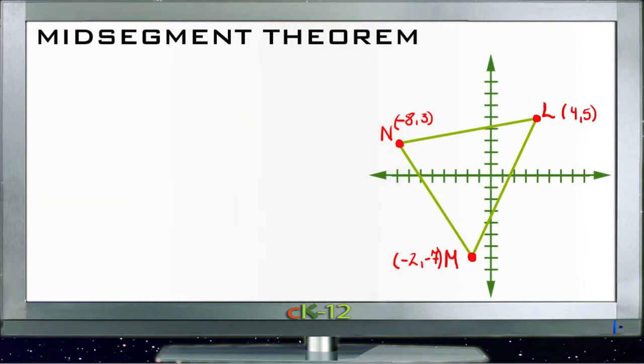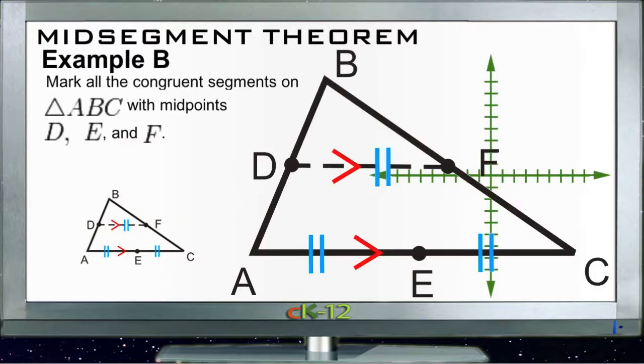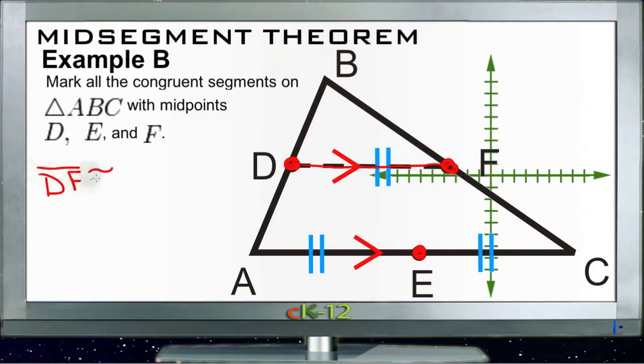Alright, Example B. Example B says mark all the congruent segments on triangle ABC with midpoints D, E, and F. So here's our triangle ABC, and here are our midpoints D, E, and F. Now recall the midsegment theorem tells us that if we mark the midsegment, it's going to be congruent with half of the length of the opposite side. So DF is congruent with AE.